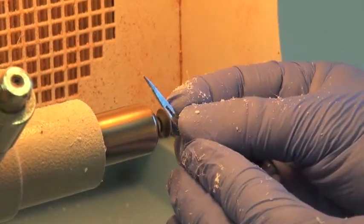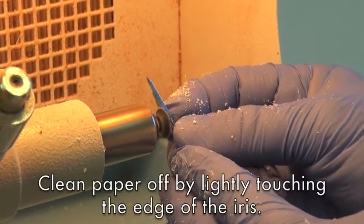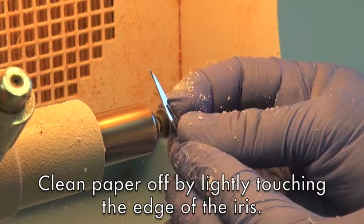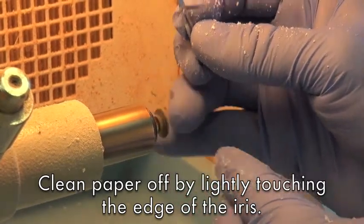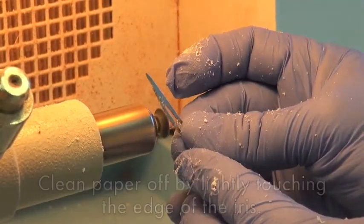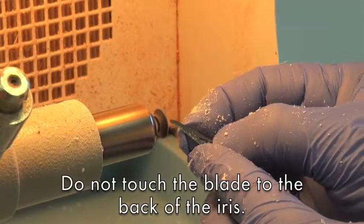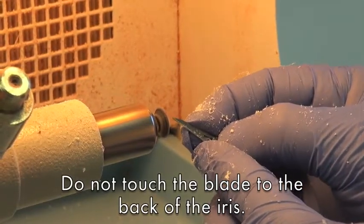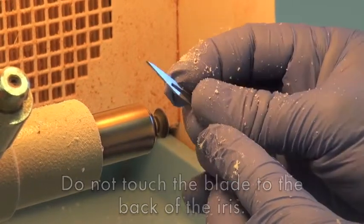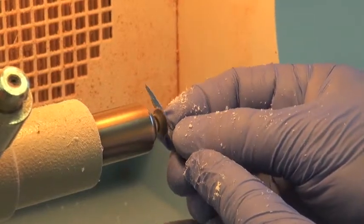I'm going to just gently clean any paper off the outer edge by lightly touching the back of the edge with my blade to remove any paper. I am not touching the image in any way with my blade on the backside, just removing the paper from the edge.